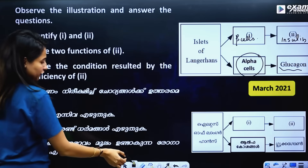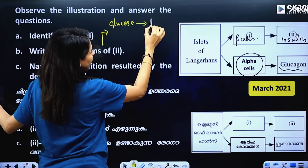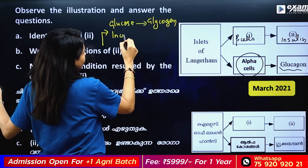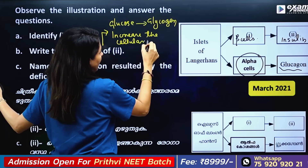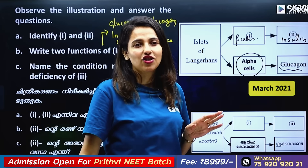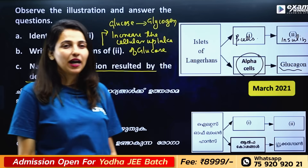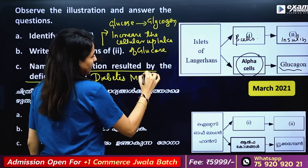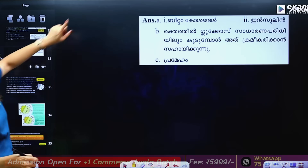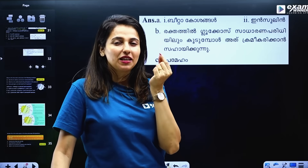Write the function of the two. Insulin converts glucose to glycogen, stored in the liver and muscles, and increases the cellular uptake of glucose, lowering blood glucose levels. The condition resulting from deficiency of insulin is diabetes mellitus, also called Prameha.